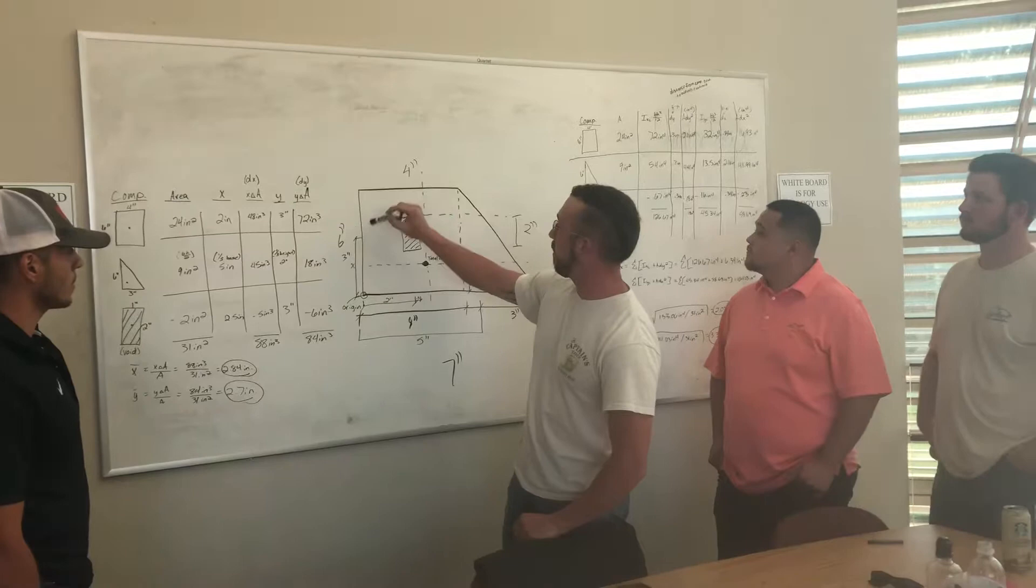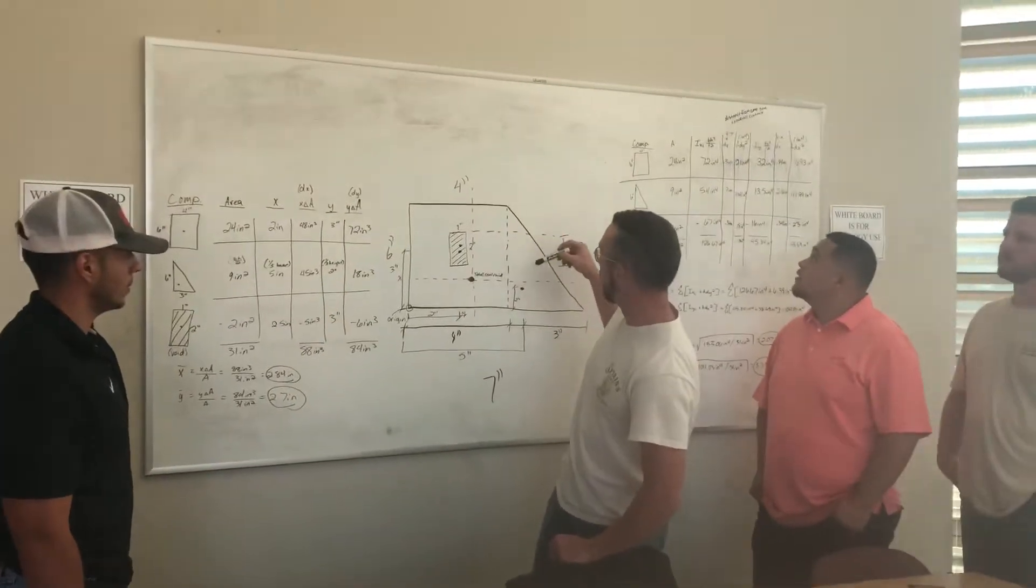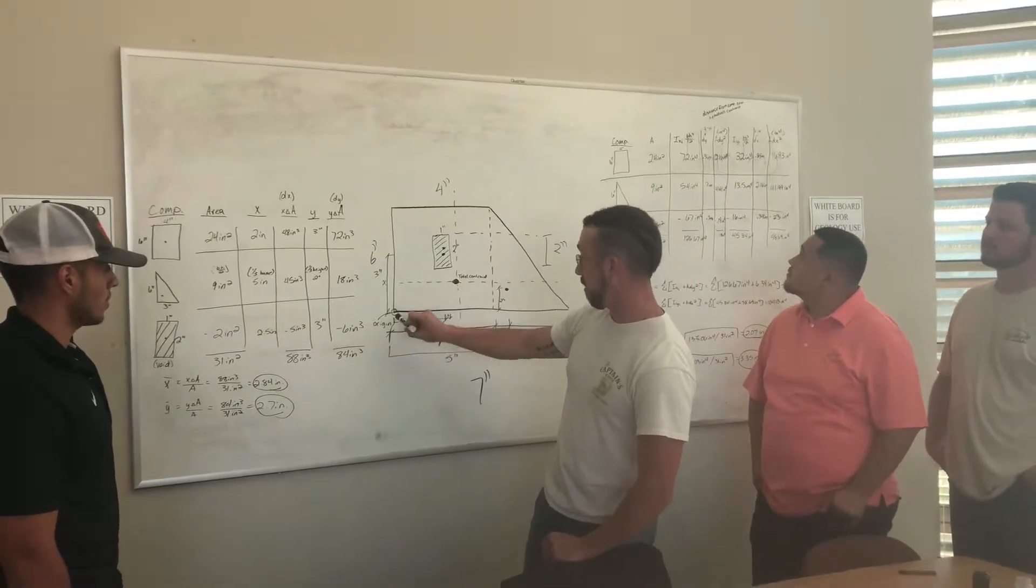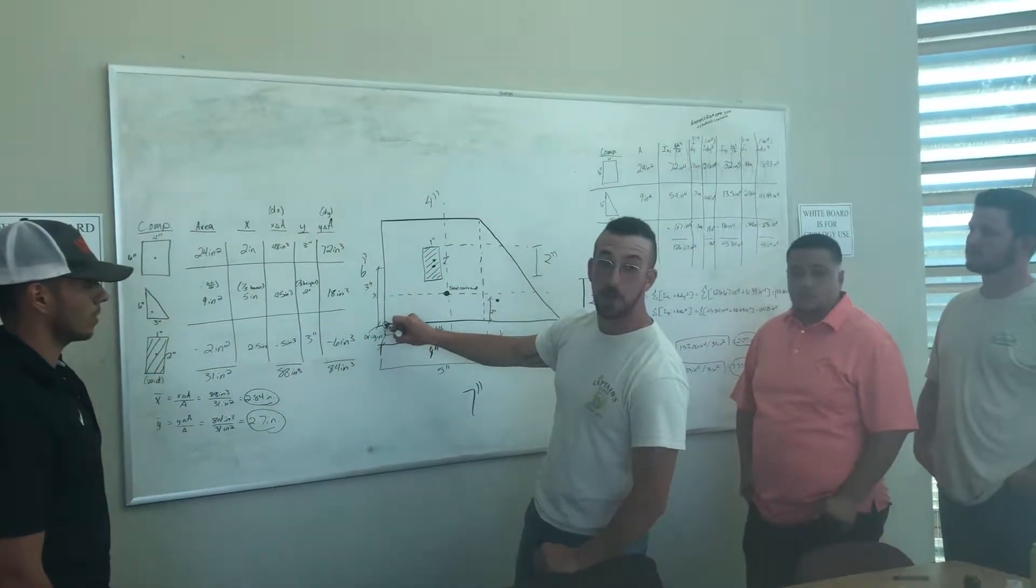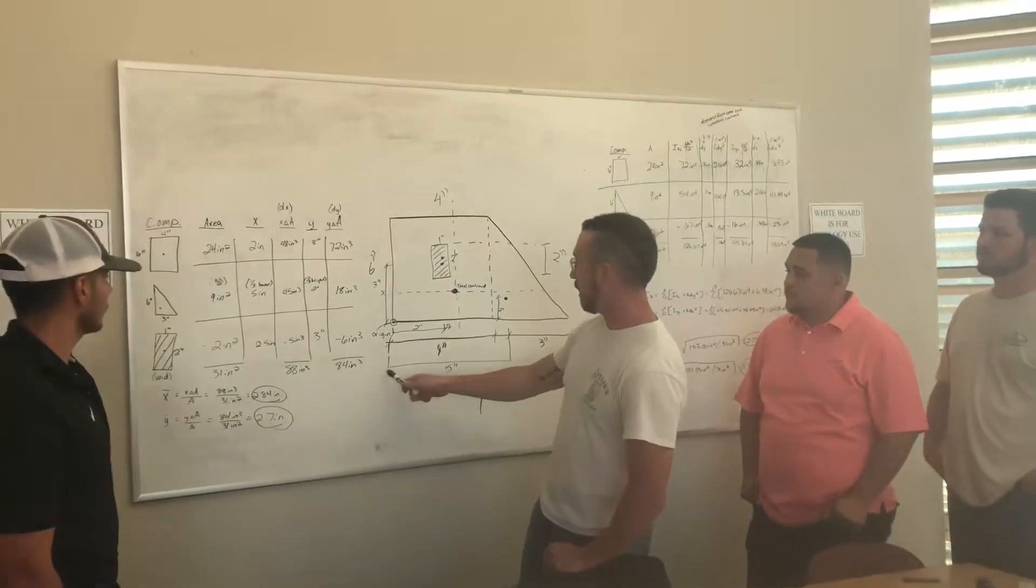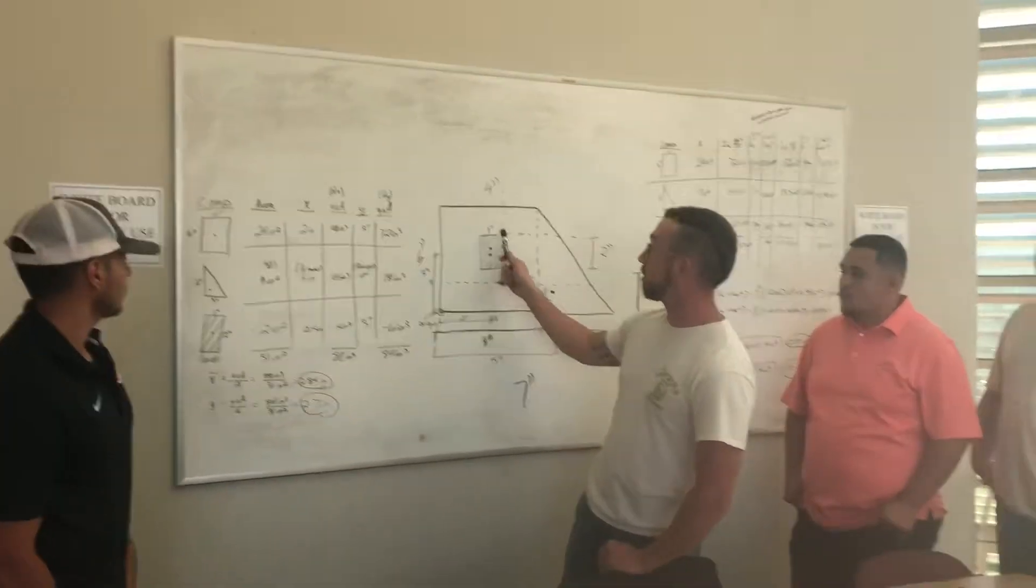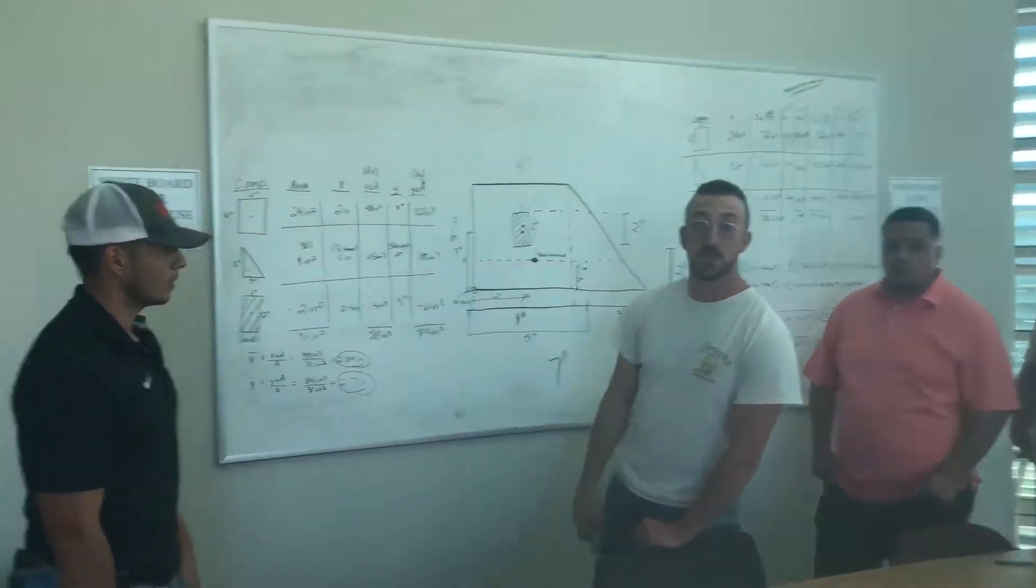We had our area of a rectangle figured out, and our area of a triangle with a void. We've sat down and figured our origin would be at the bottom left-hand side of our problem. We made all of our measurements before we started to find all of our centroids. I'll pass it over to Luis to explain that.